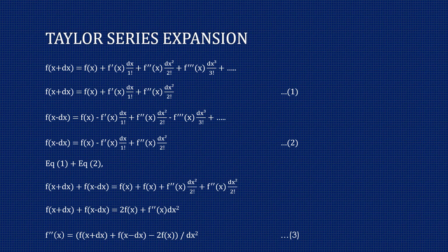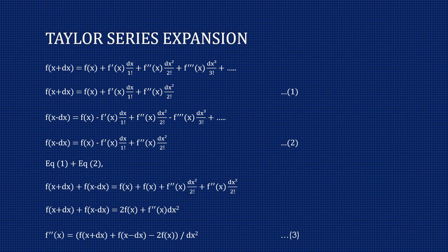Retaining the first two derivative terms, we write the forward Taylor series expansion as: f(x + dx) = f(x) + f'(x)·dx/1! + f''(x)·dx²/2!. This is called the Taylor series expansion in the forward direction because we are moving ahead of x by adding dx. In the similar fashion we write the Taylor series expansion in the backward direction: f(x − dx) = f(x) − f'(x)·dx/1! + f''(x)·dx²/2! − f'''(x)·dx³/3! + ... Neglecting higher-order terms gives f(x − dx) = f(x) − f'(x)·dx/1! + f''(x)·dx²/2!.